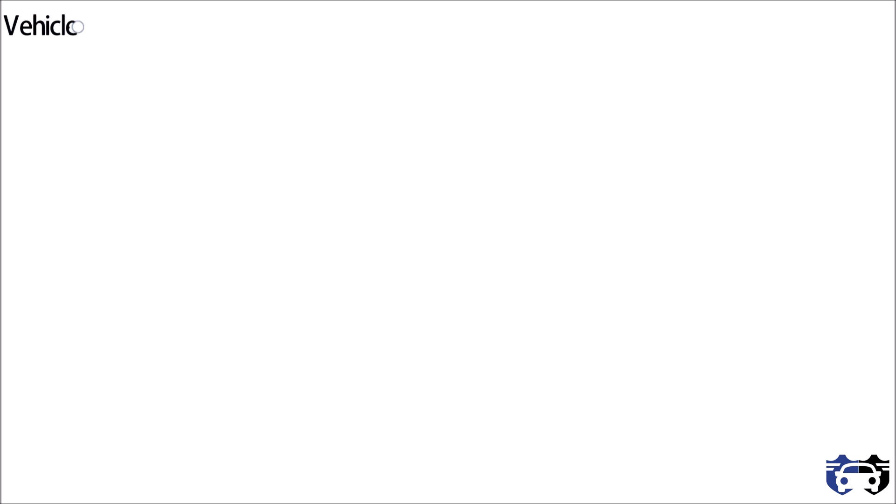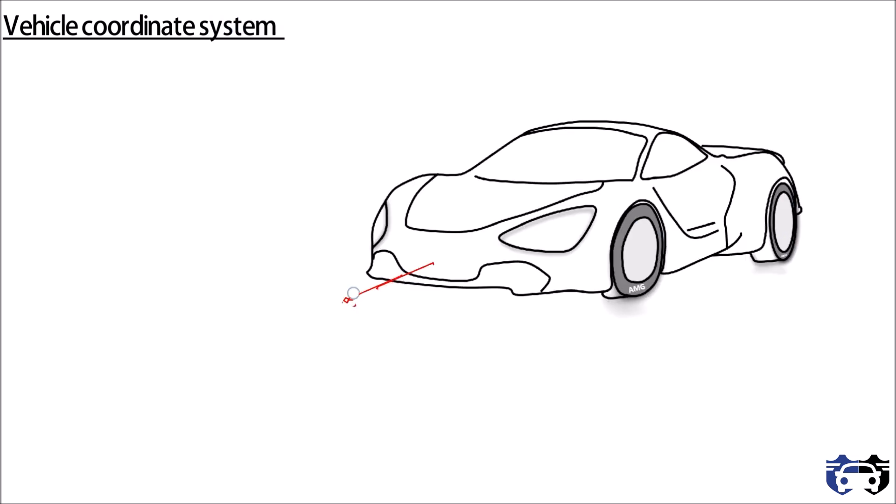Now let's understand the coordinate system we are going to use in vehicle roll dynamics. Here you can see that the x-axis is the longitudinal axis passing through the center and directed forward with force Fx.